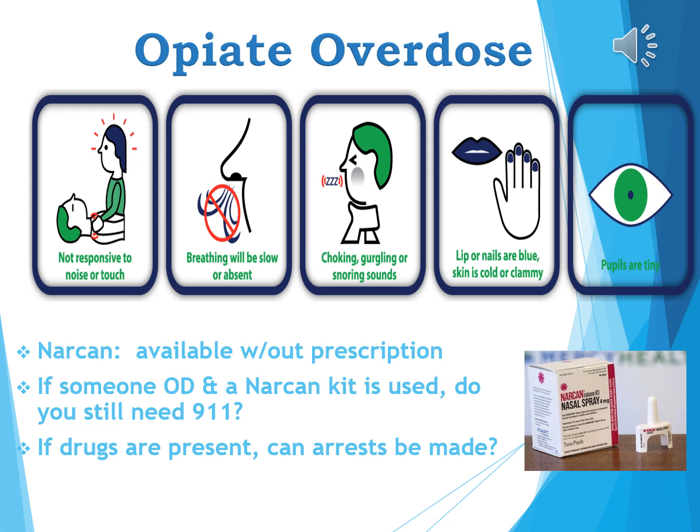There are many opiate drugs — opium, heroin, oxycodone, codeine in cough syrups, morphine for pain control, and others. Interestingly, heroin was originally thought to be the cure for opium addiction, but was quickly found to be highly addicting and producing quite a high. Let's consider signs of an opiate overdose. The first four symptoms can be vaguer: not responsive to noise or touch, breathing slow or absent, choking or gurgling sounds, and lips or nails turning blue.